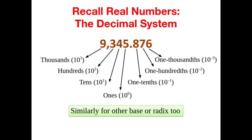Recall the decimal number system where digits after the decimal point have lower and lower place values as we move toward the right. So in this example, the 8 after the decimal point has a place value of 0.1 or 10 power minus 1. The next digit 7 has a place value of 10 power minus 2 and so on.